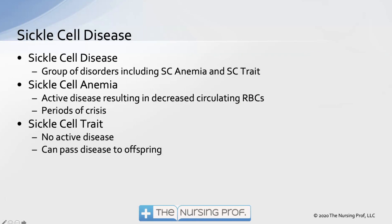Sickle cell disease comprises a group of disorders that includes sickle cell anemia and sickle cell trait. Sickle cell anemia is an active disease where red blood cells are actively sickling, with periods of crisis caused by dehydration or hypoxemia, and then periods of fairly normal red blood cell function. Sickle cell trait involves no active disease, but the patient carries the trait and can pass the disease on to offspring.